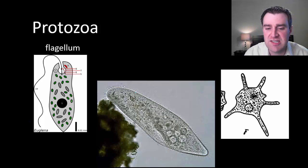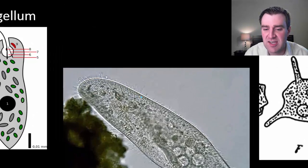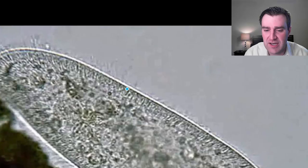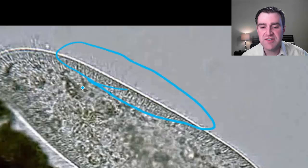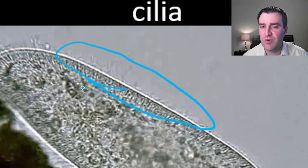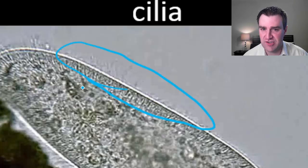Paramecia, if you look closely at the outside, have lots of little hairs rather than one giant tail, so they move with cilia instead of a flagellum.